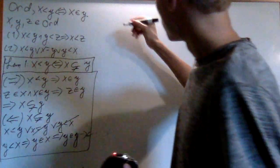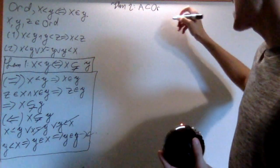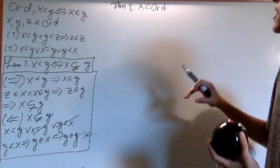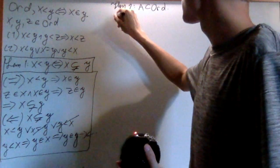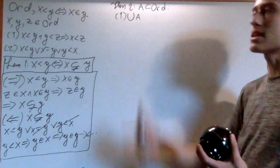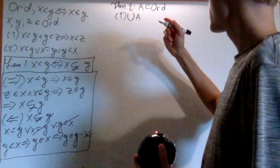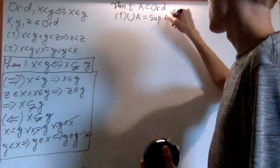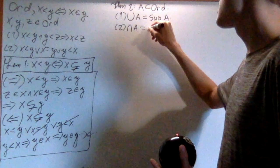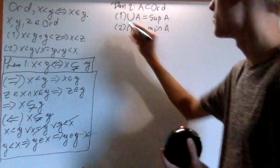Next, let's discuss a theorem about classes of ordinals. If I have A, a subclass of Ord — an arbitrary collection of ordinals that need not be a set, it just needs to be a class — then the first thing is that the union of all the elements in A is the supremum of A. The second condition is that the intersection of all the elements in A is the minimum of A, not the infimum, because the intersection of A is going to be in A.